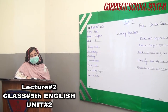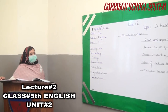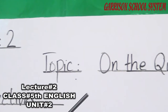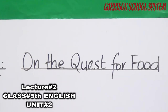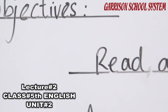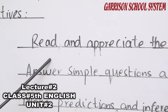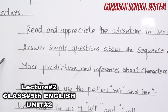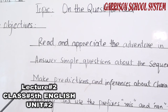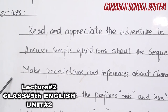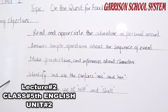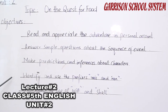Hope you all have done your homework. Let's come to unit number two, which is also a narration and the topic is 'On the Quest for Food.' You will be able to read and appreciate the adventure in a personal account — stories about adventure — and answer simple questions about the sequence of events, make predictions and inferences about characters, and predict what happens next according to the situation in the story.